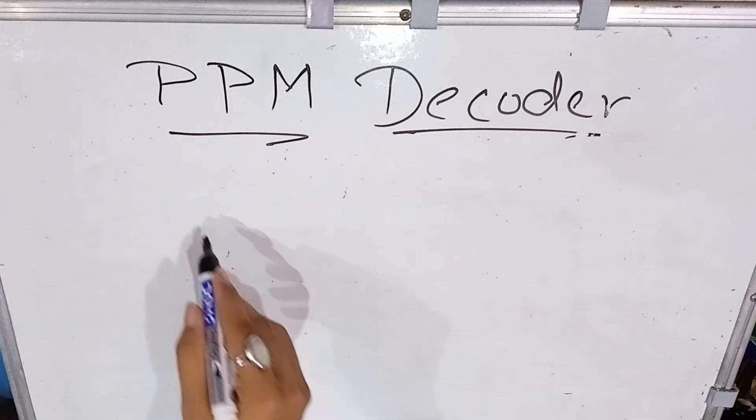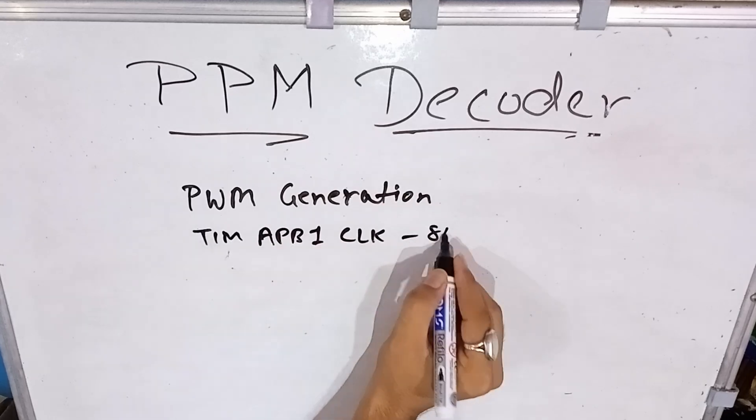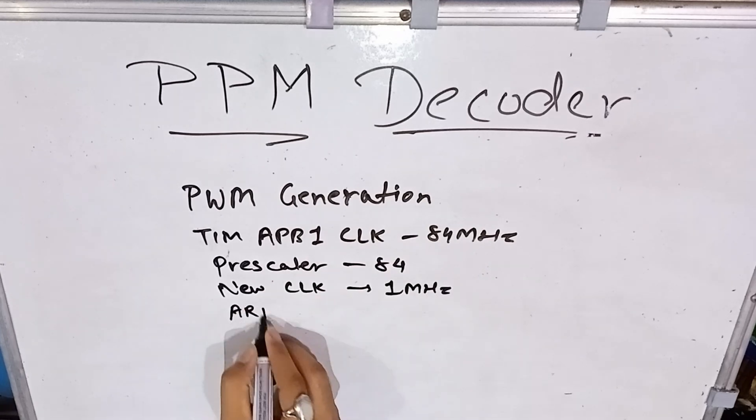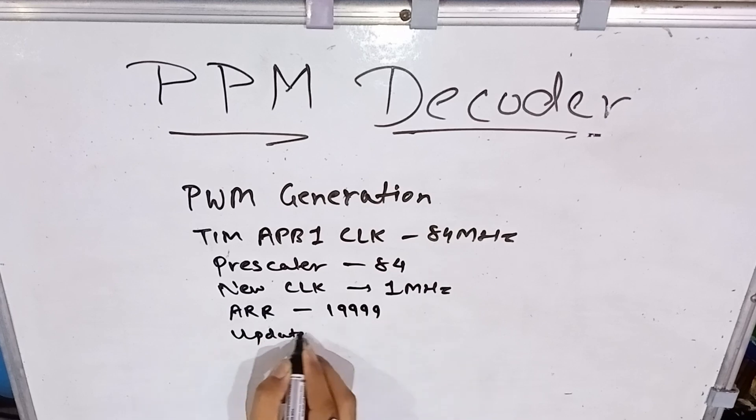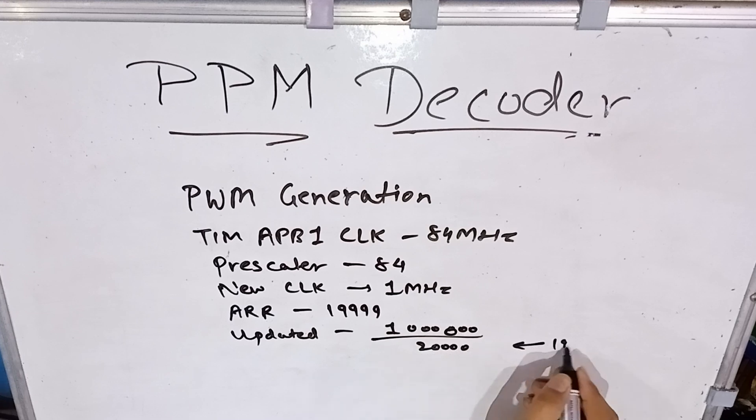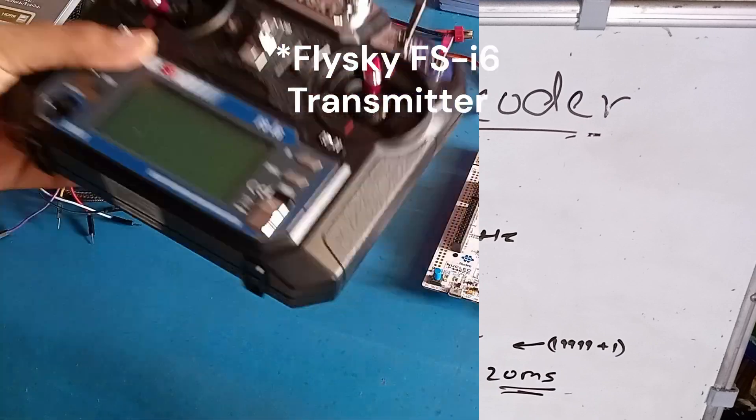This is the basic calculation. Next, for PWM generation, we have the same APB1 clock as the main clock, 84 megahertz, prescaler 84. Our new clock would be 1 megahertz and we'll be counting up to 19,999. So eventually doing some calculation it gives us a 50 hertz period or 20 millisecond period. If you put 1000, 1500, or 2000 value directly into the CCR or capture compare register, you will have a PWM of 1, 1.5, and 2 milliseconds respectively.